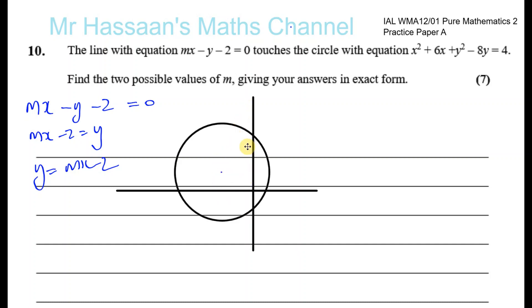The center is at minus 3 and 4. So I'm just making a little sketch. Basically, there's an equation of the line y equals mx minus 2. So somewhere down here, minus 2, there's a line that passes through minus 2. And that line touches the circle with this equation.